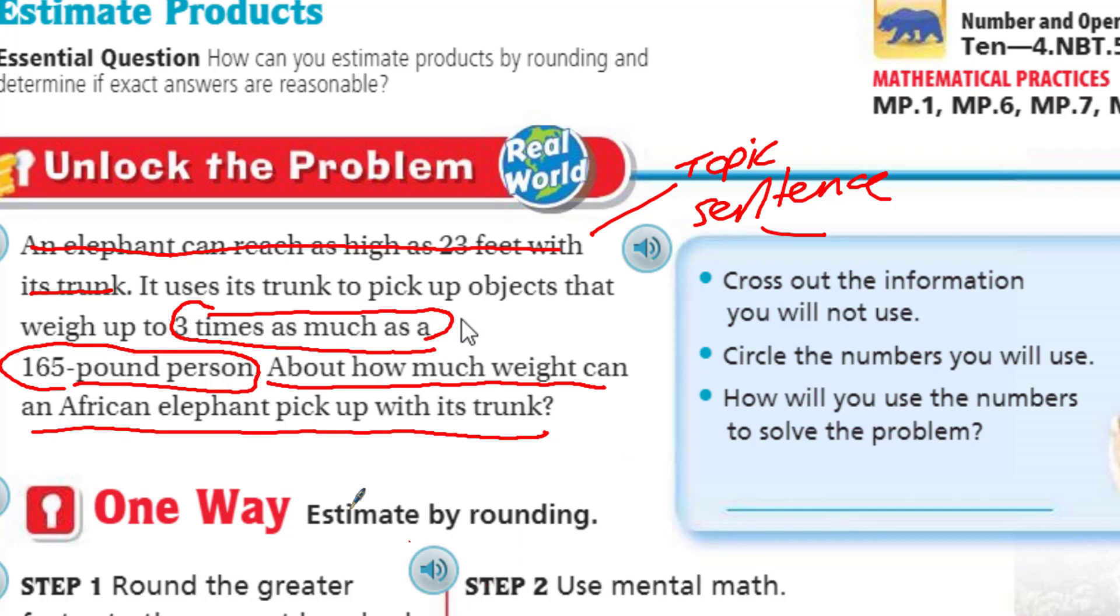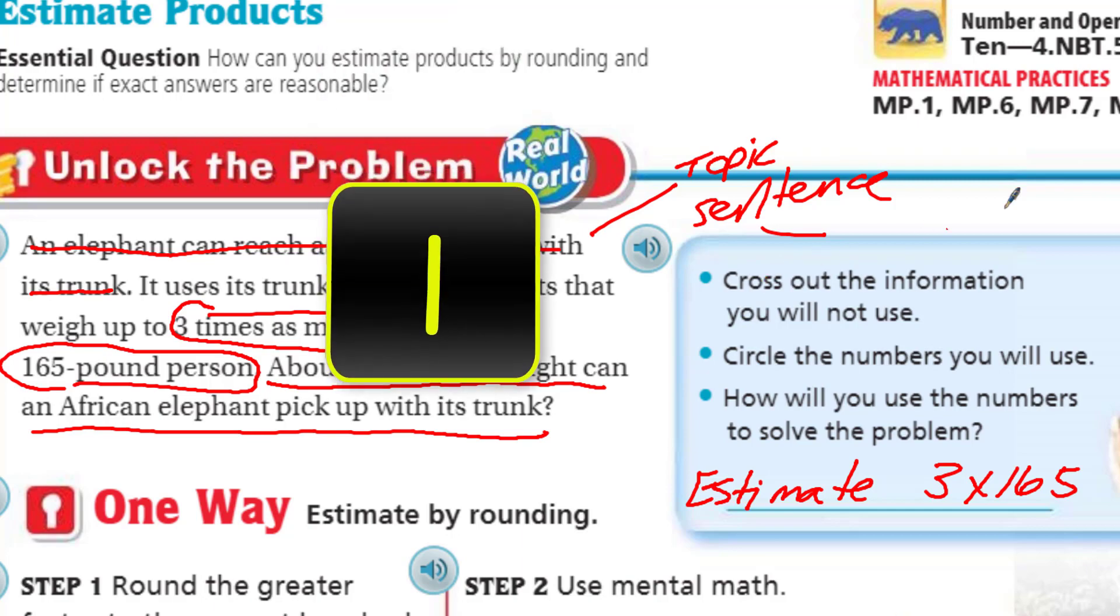So I would think that we circle the numbers you will use. The fact that it uses its trunk to pick up objects that weigh three times as much, that seems really important. Three times as much as a 165-pound person. So I'm going to just circle both of these. It says how we use the numbers to solve the problem. Since it is asking us about how much weight, that suggests I'm going to need to estimate.